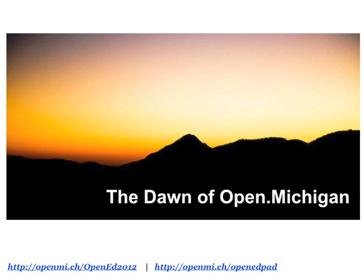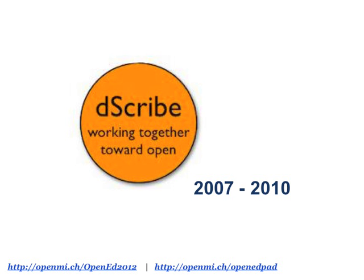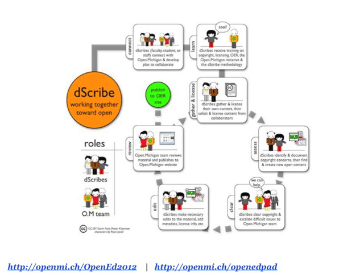Open Michigan was a pilot project started in 2007 by a faculty member at the School of Information who was really interested in the OpenCourseWare model put forth by MIT. But he quickly realized that model was not going to work for our university. We're pretty large — 40,000 students, about 20,000 faculty and staff members, and we have a robust health system. We're very decentralized, so a lot of our schools and colleges act pretty autonomously.